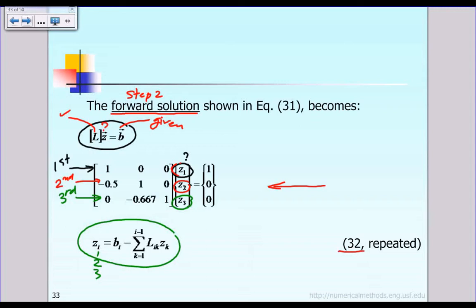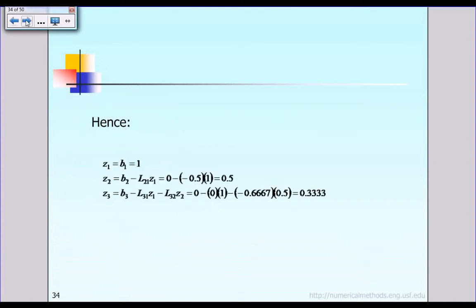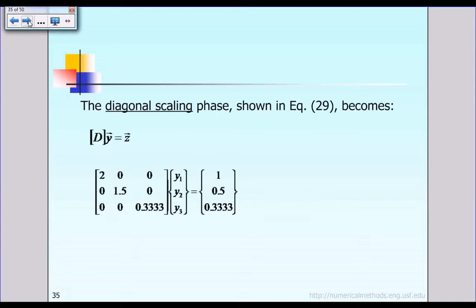We solve for the unknown zi, where the subscript i could be one, two, or three. This takes care of step two. By the end of step two we solved: z1 equal to 1, z2 equal to 0.5, and z3 equal to 0.333.